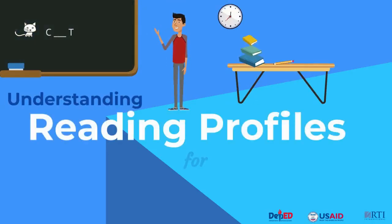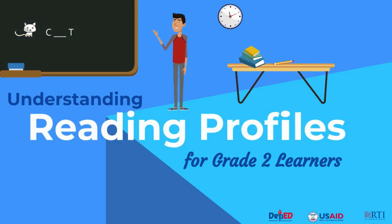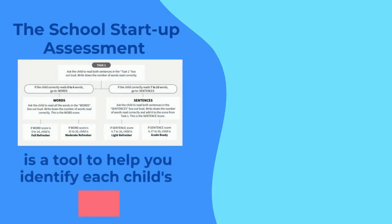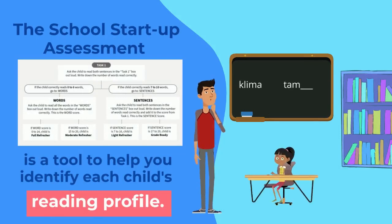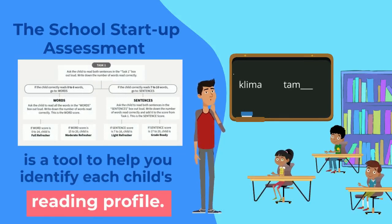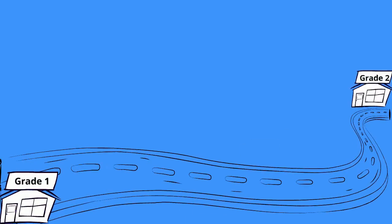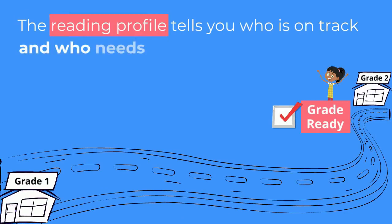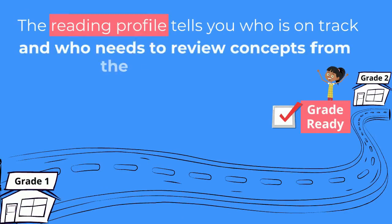Understanding reading profiles for Grade 2 learners. The School Startup Assessment is a tool that helps you identify each child's reading profile. The reading profile tells you who is on track and who needs to review concepts from the previous grade.